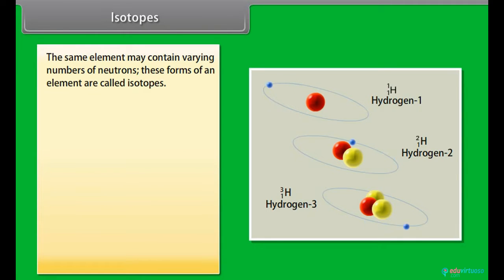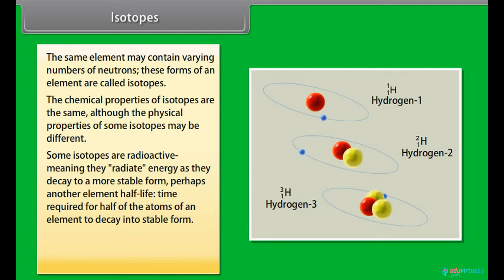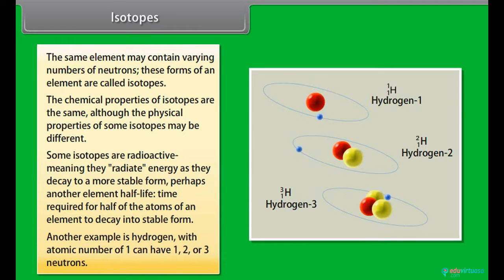Isotopes: The same element may contain varying numbers of neutrons; these forms of an element are called isotopes. The chemical properties of isotopes are the same, although the physical properties of some isotopes may be different. Some isotopes are radioactive, meaning they radiate energy as they decay to a more stable form. Half-life is the time required for half of the atoms of an element to decay into a stable form. For example, hydrogen with atomic number 1 can have 1, 2, or 3 neutrons.